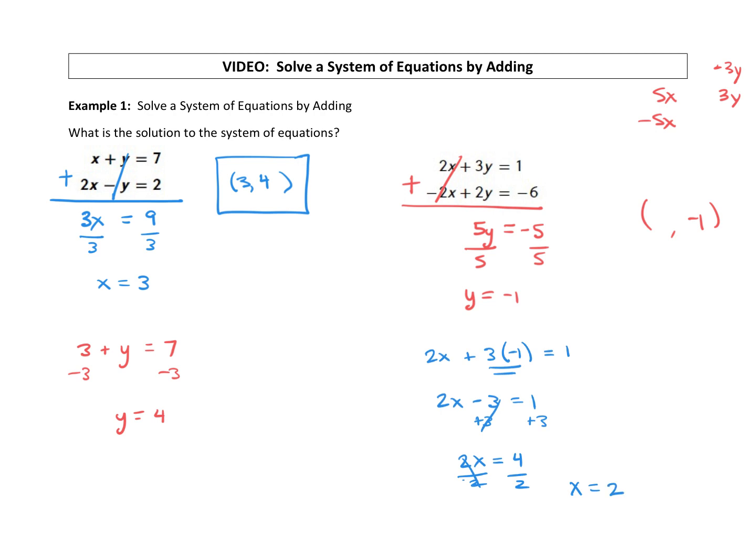So our solution, positive 2, negative 1. And again we could take this x and this y, plug it into the x and the y for both equations. And it should work out in both equations for that to be our solution.